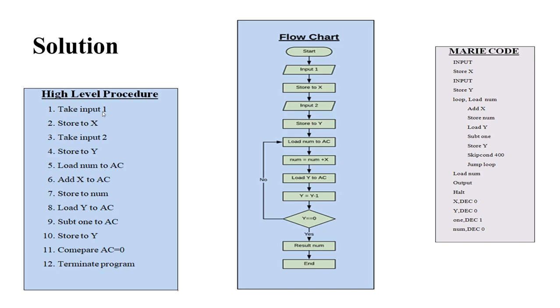Number 1: Take first value to AC. Number 2: Store it to x. Number 3: Take second value to AC. Number 4: Store it to y. Number 5: Load num value into AC, which is 0. Number 6: Plus x into AC, implying that we add num to x and store result to AC.